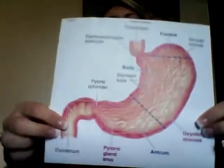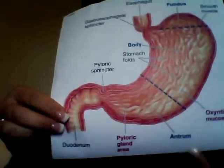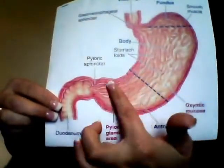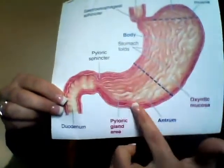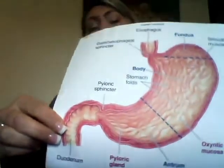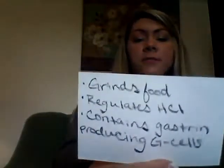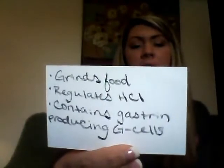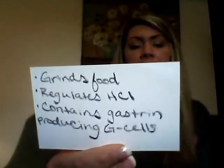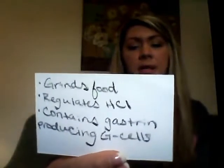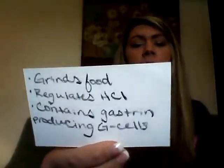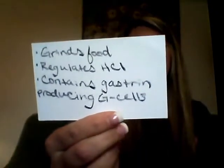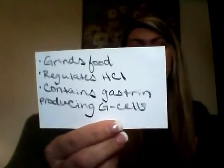Next on our list for the monogastric stomach is the pyloric antrum, down here at the bottom of the stomach. The pyloric antrum is responsible for grinding the food. It also regulates the hydrochloric acid concentration of the stomach and contains gastrin-producing G cells.